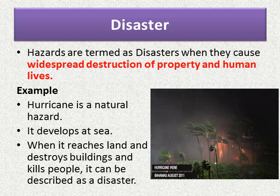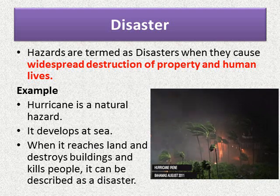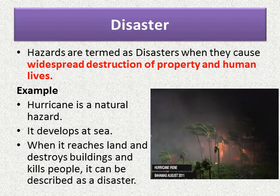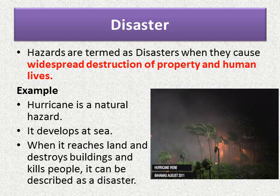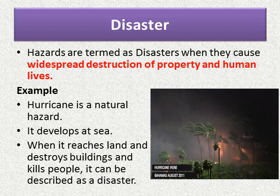Hazards are termed as disasters when they cause widespread destruction of property and human lives. Consider a hurricane as an example — a hurricane is a natural hazard that develops at sea. But when it reaches land and destroys buildings and kills people, it becomes a disaster. In the picture you can see Hurricane Irene, which occurred in the Bahamas in August 2011, showing how wild the winds were.